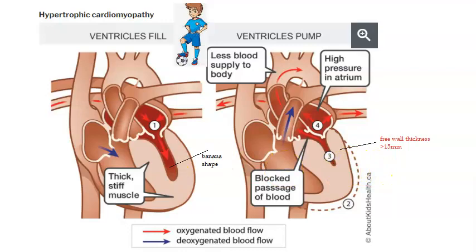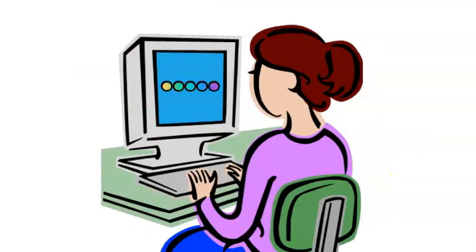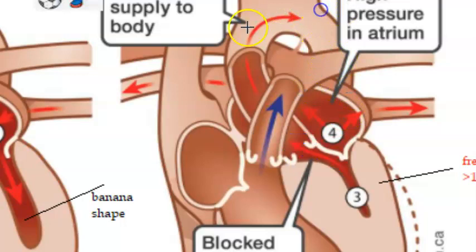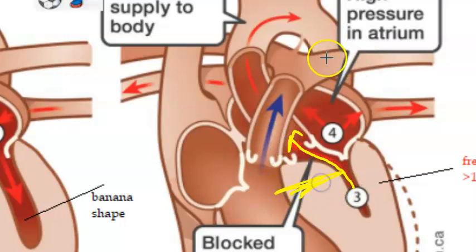Look at the exit from the left ventricle. The oxygenated blood has to leave via the aorta. This path is very narrow because of the septal hypertrophy, and that is why you have murmurs in these people.